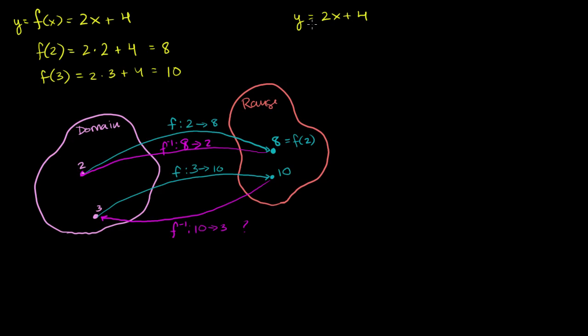So let's do that. If we subtract 4 from both sides of this equation, we get y minus 4 is equal to 2x. And then if we divide both sides of this equation by 2, we get y over 2 minus 2, right? 4 divided by 2 is 2, is equal to x. So if we just want to write it that way, we can just swap the sides, we get x is equal to 1 half y minus 2.